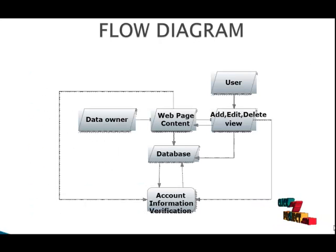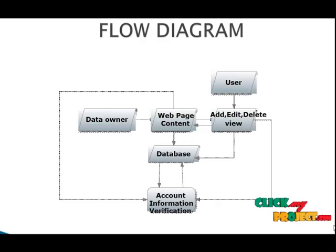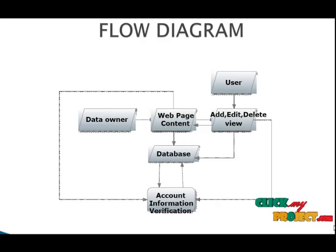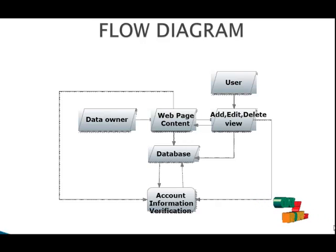Let's see the flow diagram. Our flow diagram starts with the user. The user can add, edit, delete, and view the product details — that means the user can order for a particular food. They can see how many products they have ordered, that means their order history. Before using this, the user should go through sign-up, that means registration.